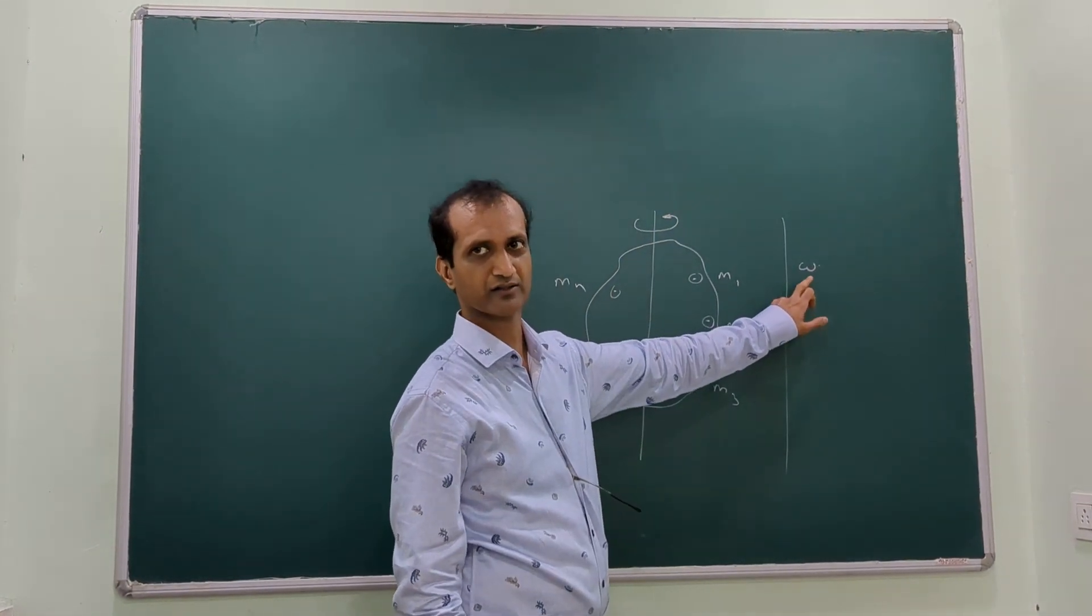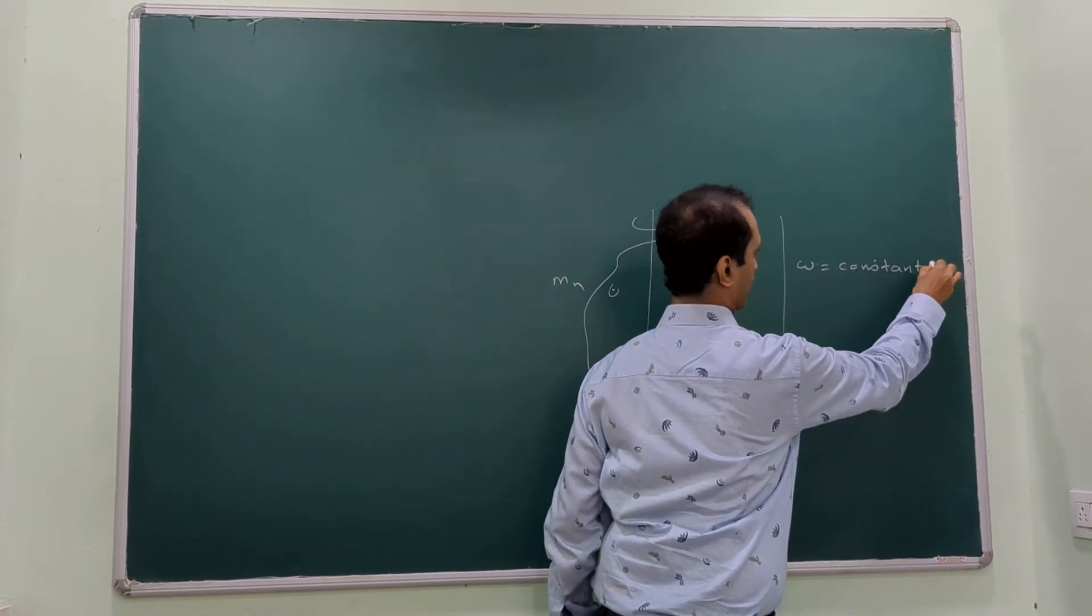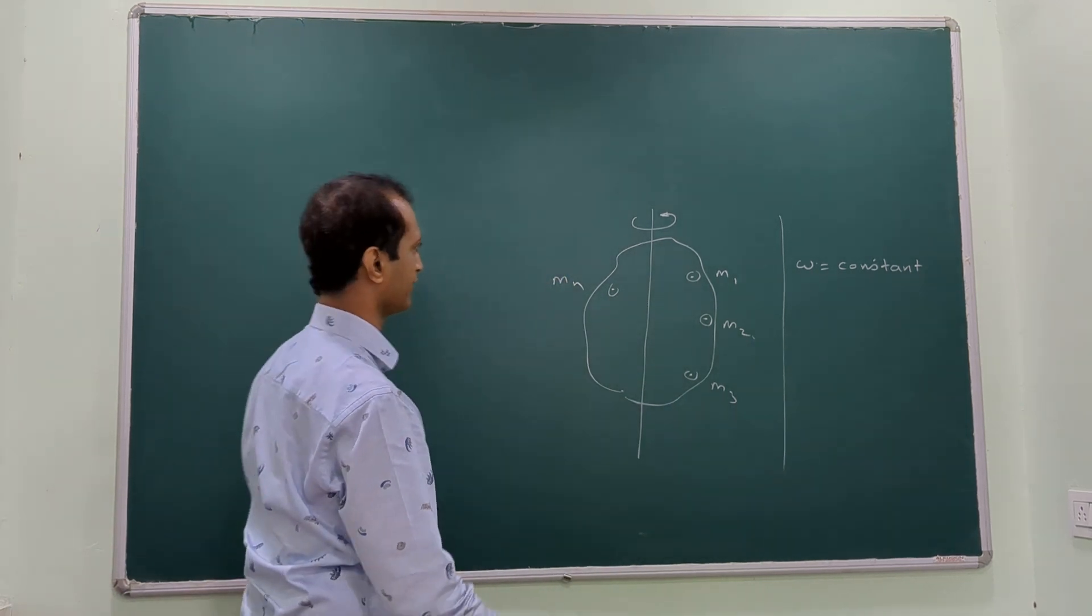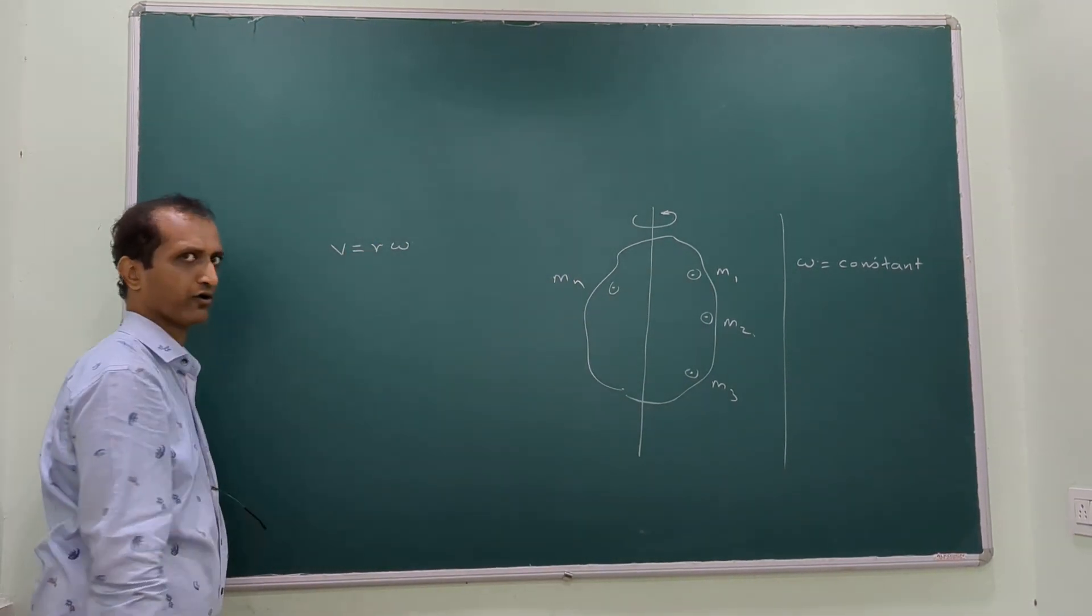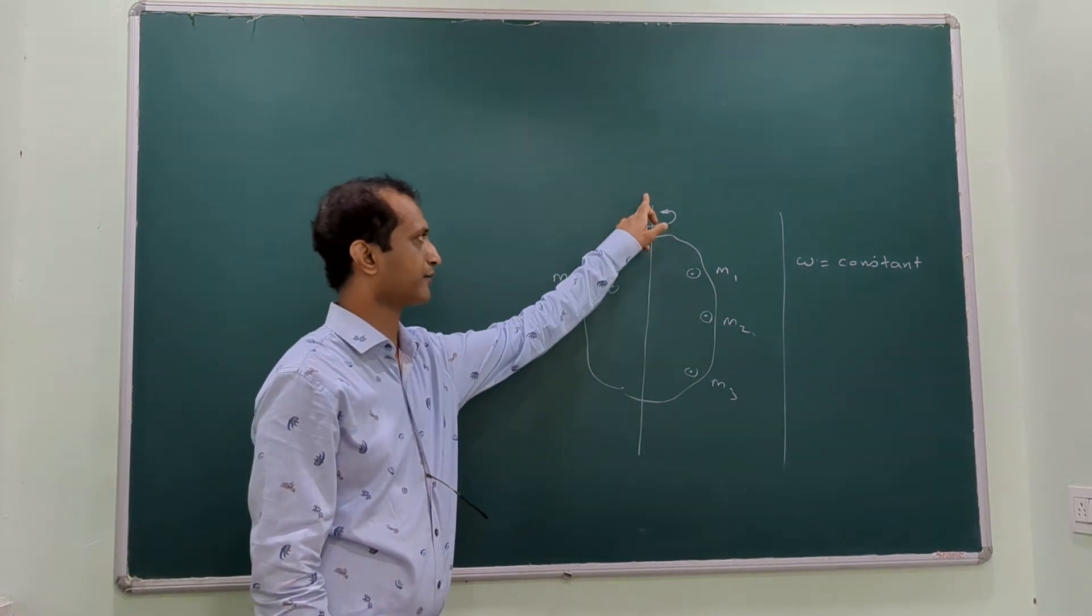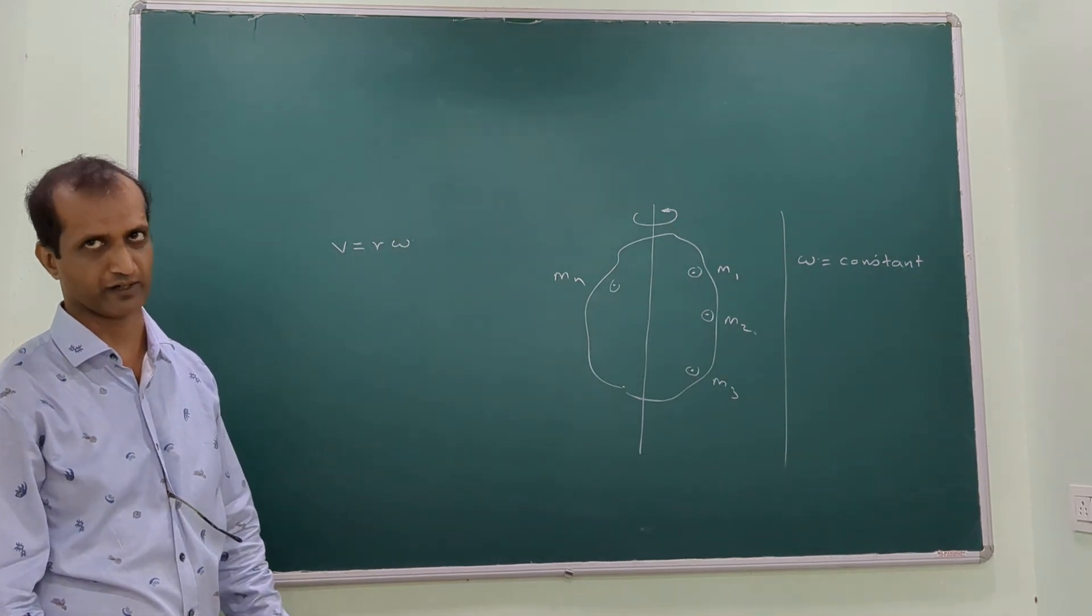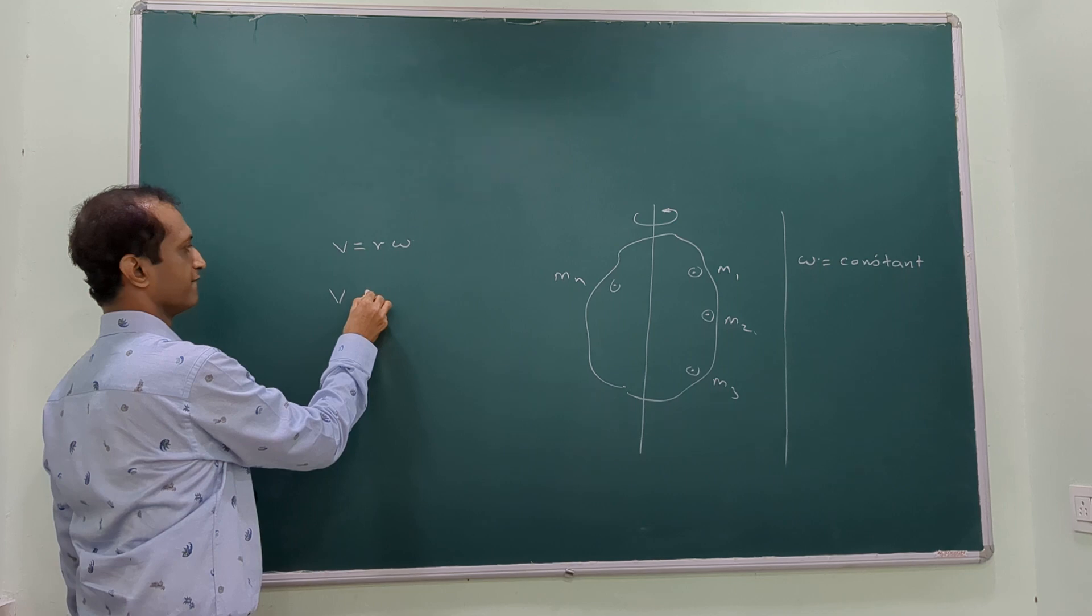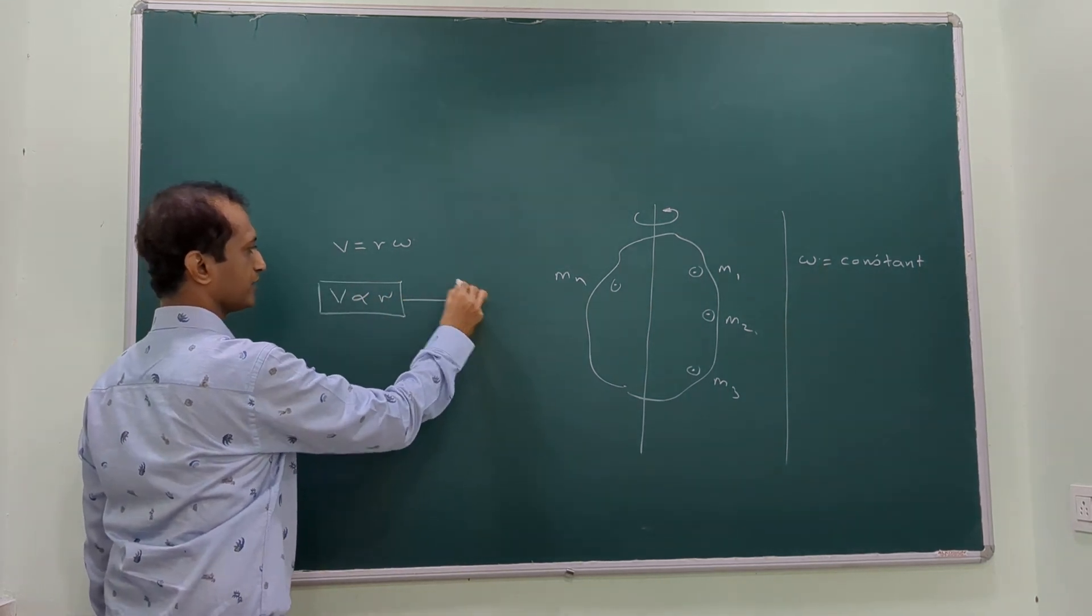What is it called? Omega. Omega is constant. We know that V equals R times Omega, where V is the velocity, R is the distance of the particle from the axis of rotation, and Omega is the constant angular velocity. Because it is constant, V is proportional to R. This is equation Y.